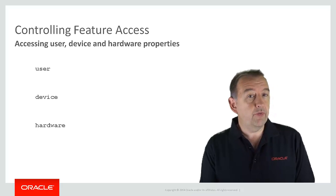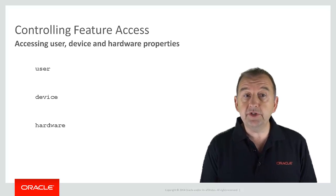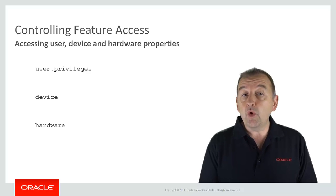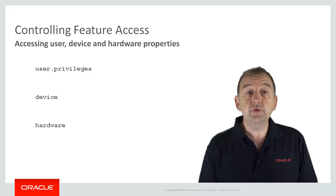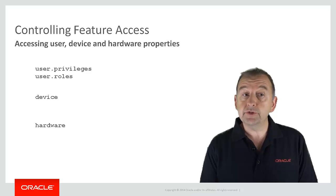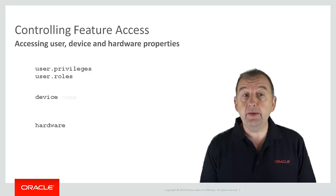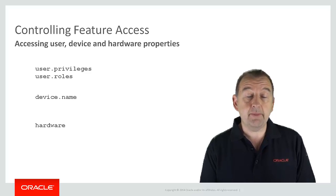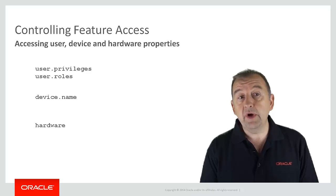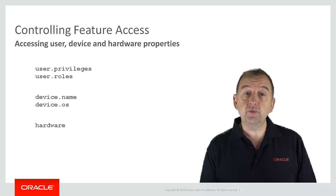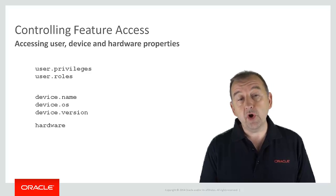To access information about the current user's privileges, you would reference user.privileges. To see what roles the current user has, you would reference user.roles. In a similar vein, you can do the same for device properties. So device.name will give you the name of the device the app is running on, device.os will tell you the operating system — for example, iOS — and device.version will give you the version number of the operating system.